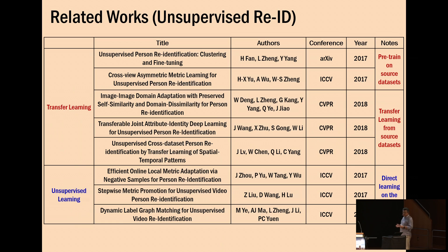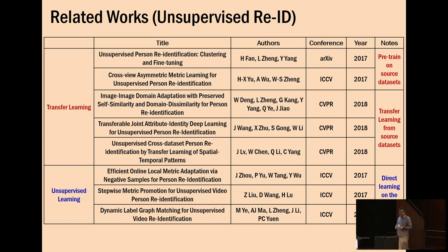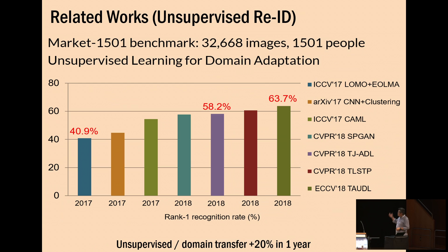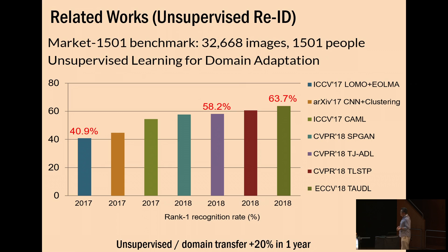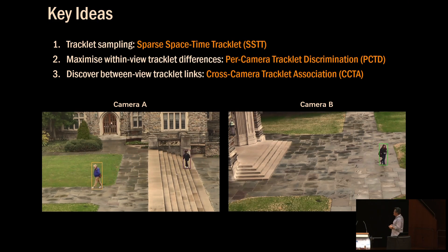Regarding related work on unsupervised person re-ID: the realization that we can't rely on strongly supervised training data to scale up person re-ID to practical use has led to a whole range of recent work broadly categorized into transfer learning and unsupervised learning. Performance of unsupervised techniques is significantly lower — the best model is currently about 63% compared to over 90% for supervised methods, a reduction of over 30% in recognition accuracy. However, significant progress has also been made over the past year.